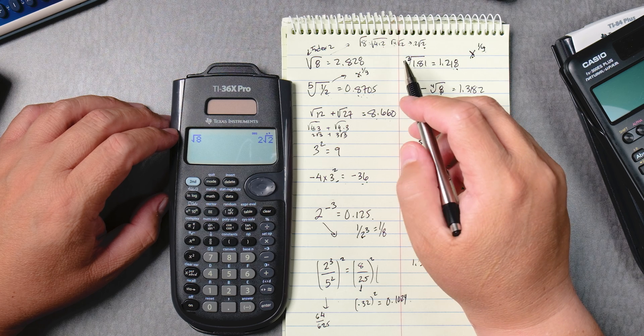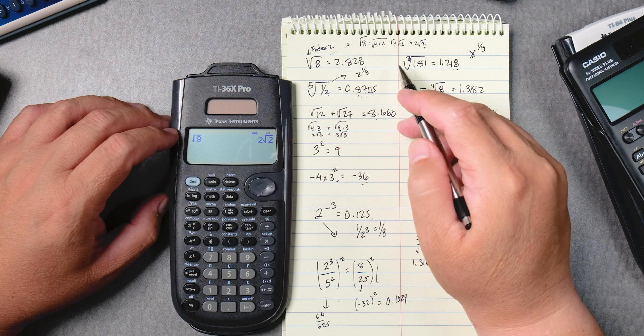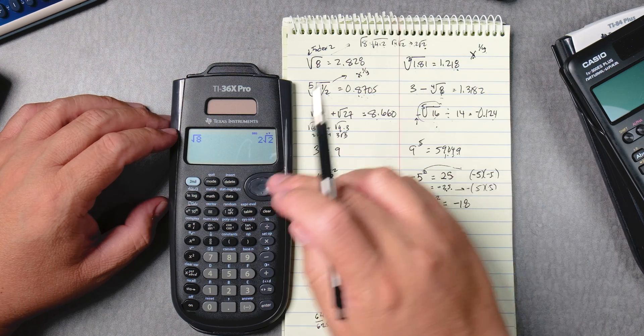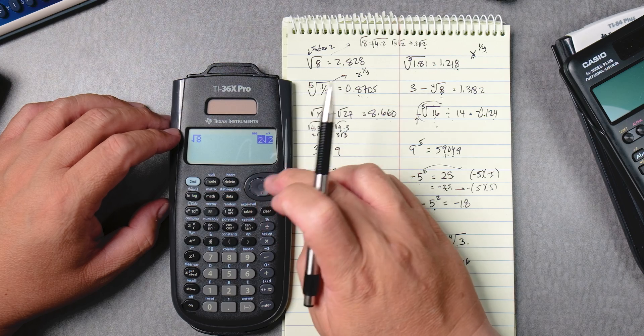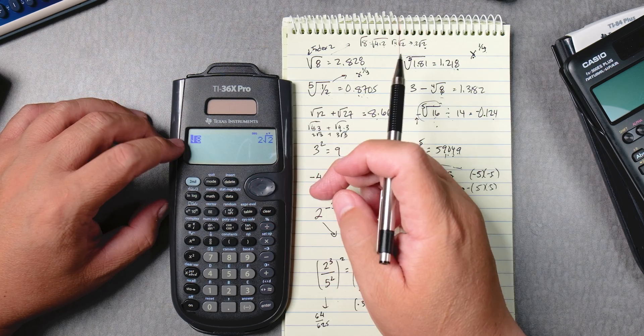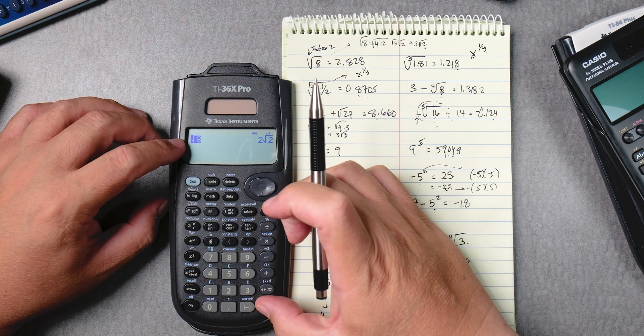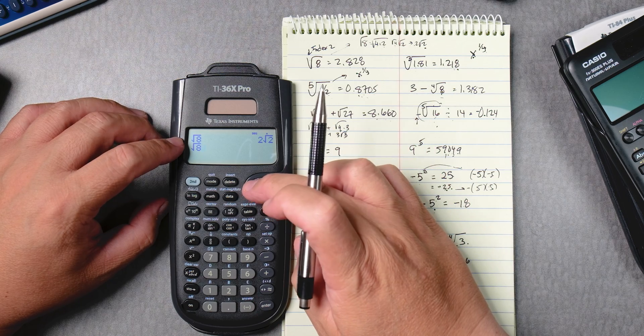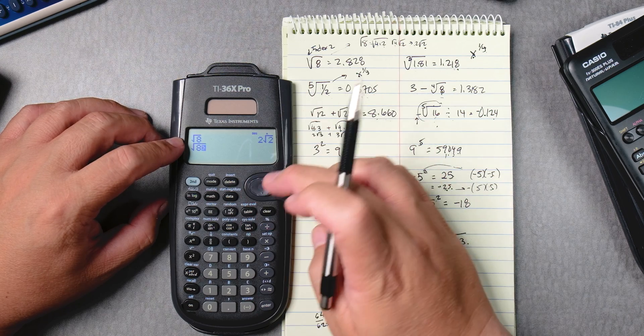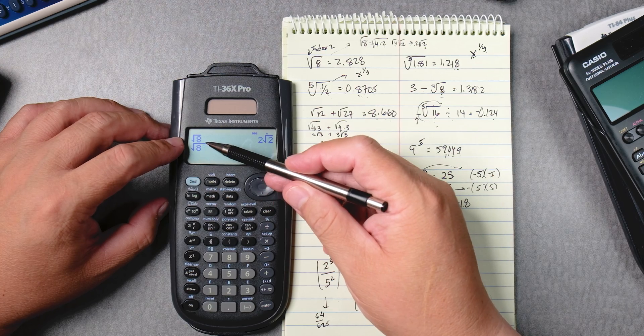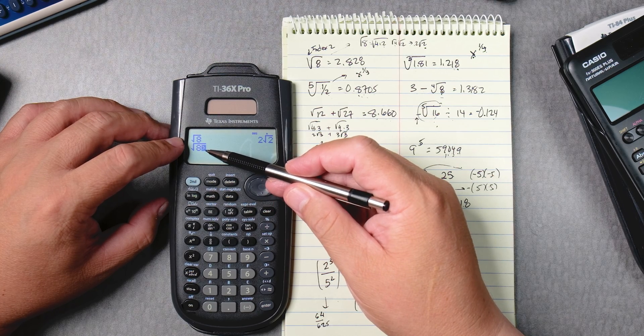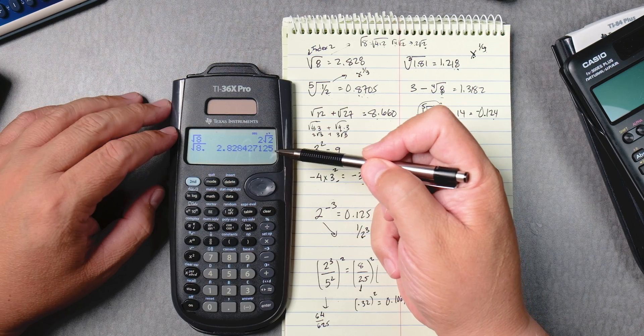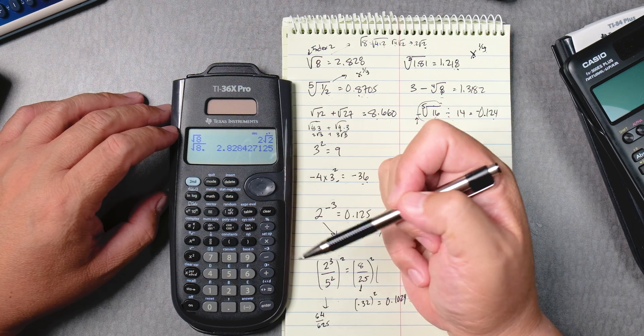One way to change this to an answer of 2.828 is to go up on this pad, go up again, copy this number by pressing enter, highlight this, press enter, and then move the arrow, the cursor, so you'll be underneath the radical and this cursor changes to an arrow, press period, enter, and it gives you 2.828.